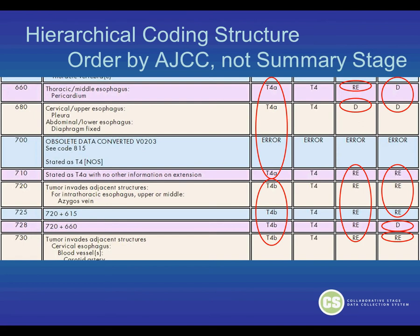We see T4A first, then T4B. In the Summary Stage column, you see Regional Extension, then Distant, then Regional Extension.